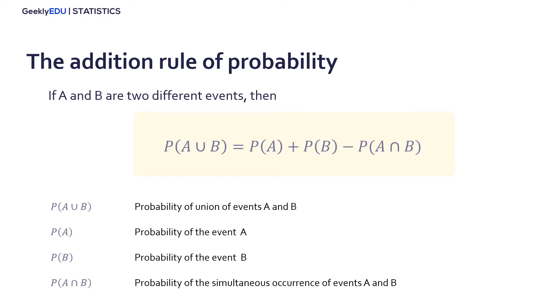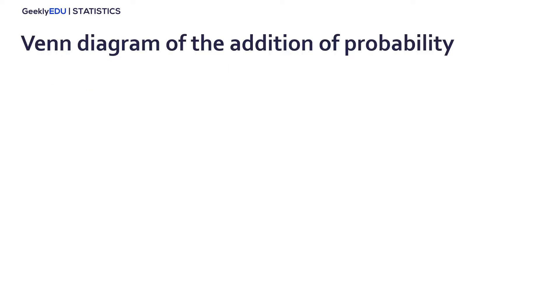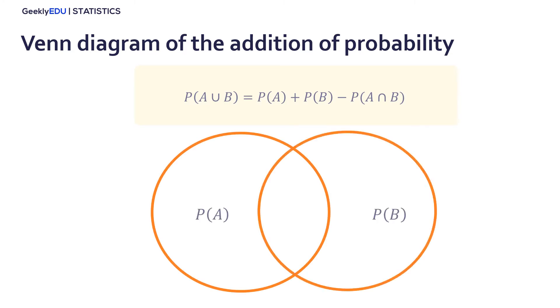To understand this formula, we can do the Venn diagram, being a circle the probability of the event A, and a second circle the probability of B. The intersection of these circles is the simultaneous occurrence of A and B. We should subtract this intersection, otherwise we would be counting this area of the Venn diagram twice.